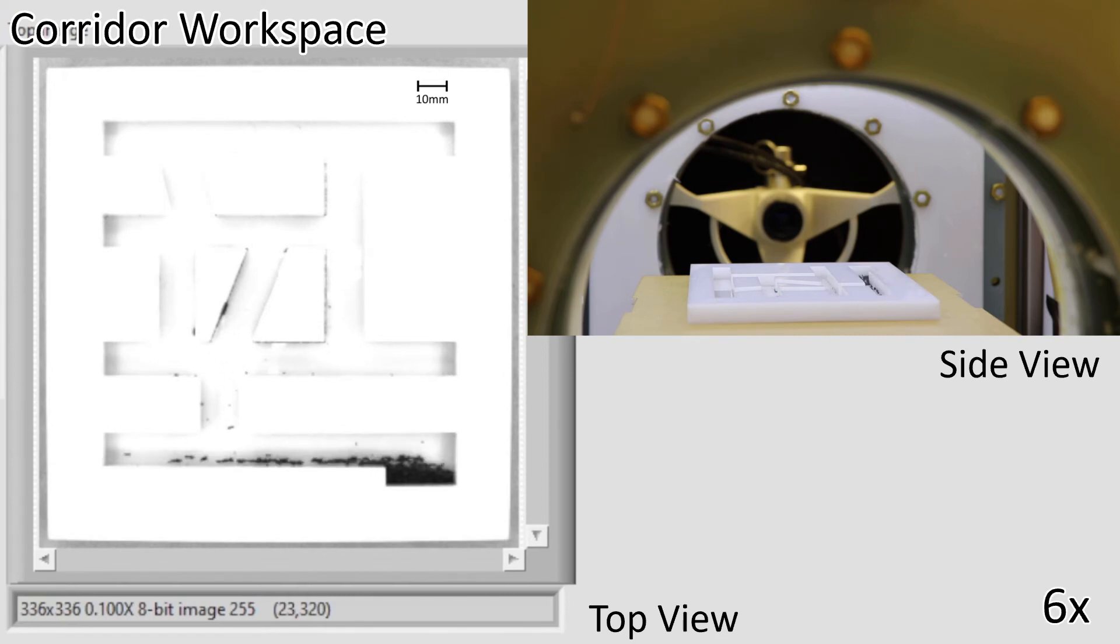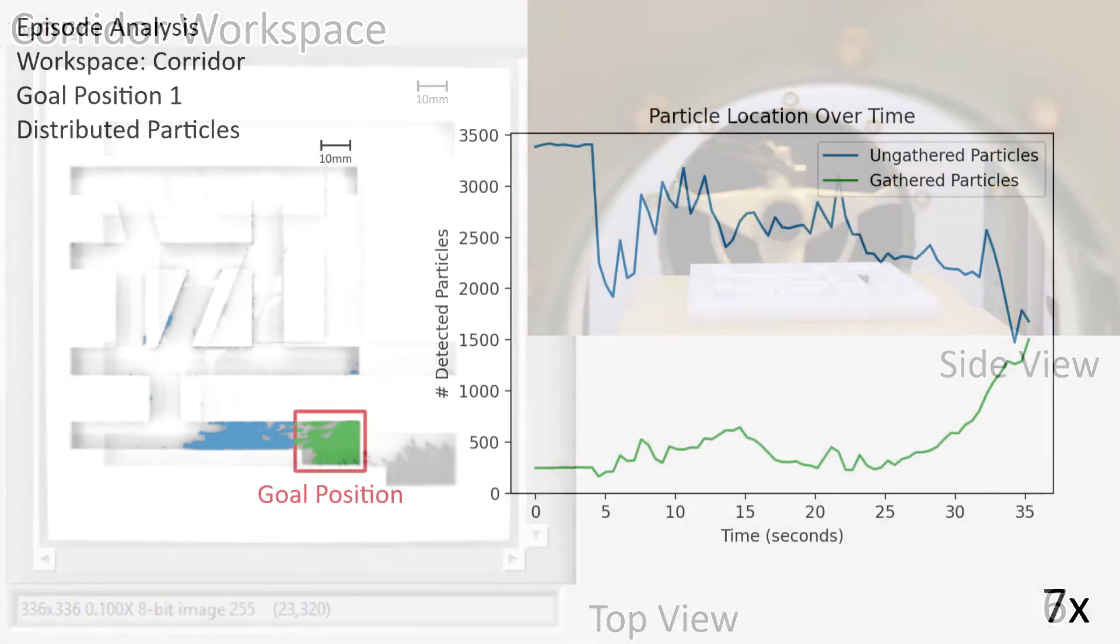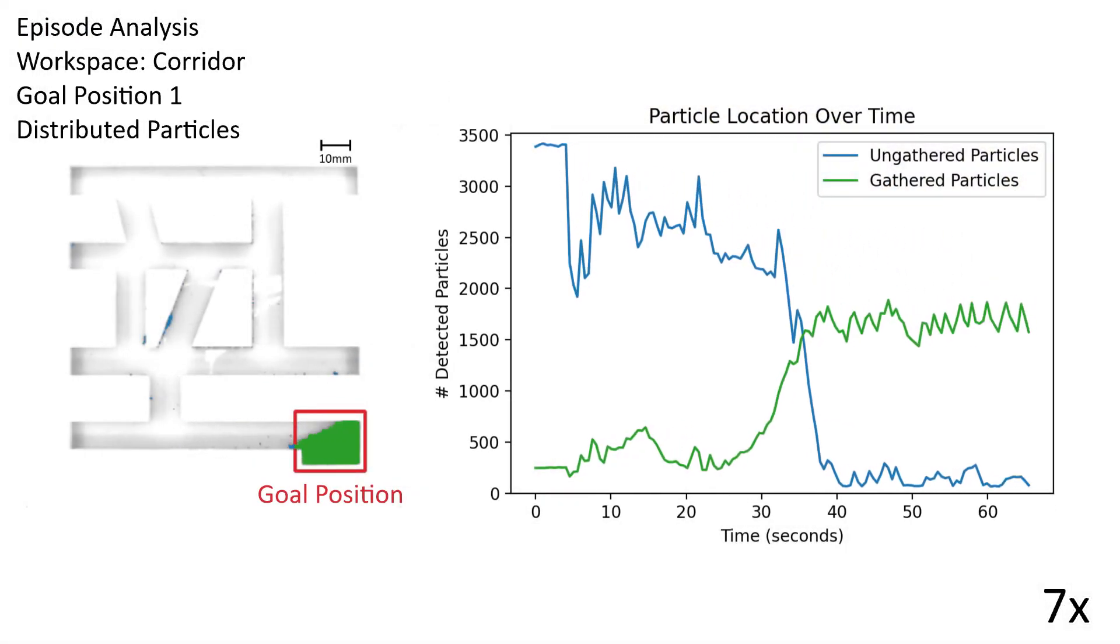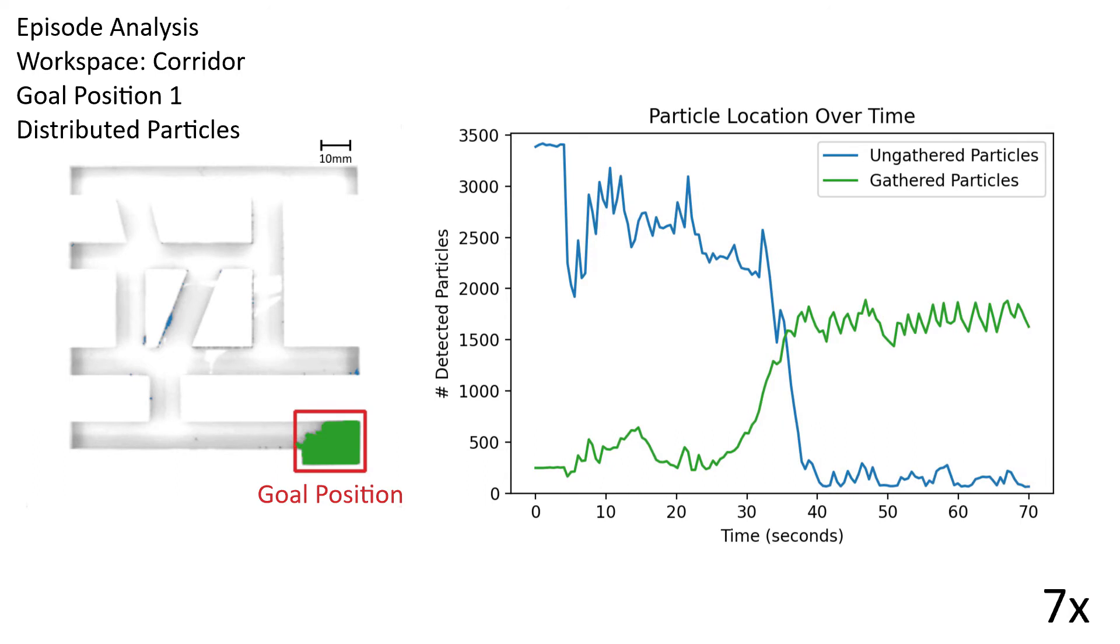The hardware experiments demonstrate fast convergence and robustness to both sensor and actuation noise. Experiments are repeated with two different workspaces and goal positions. The training process is independent of both.